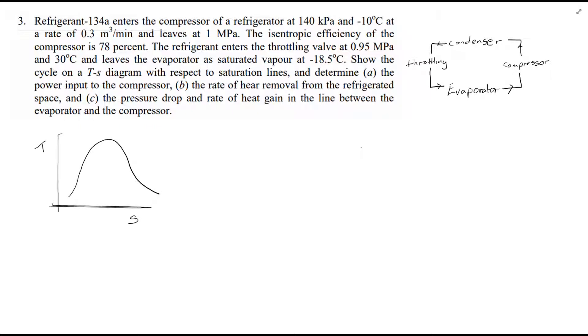Hello and welcome to example sheet 2 question 3. We're looking at refrigerant 134A and there's a compressor of a refrigerator at 140 kPa, minus 10 degrees and a rate of 0.3 m³ per minute, leaving at 1 MPa. The isentropic efficiency of the compressor is given - this is an important thing to note. Refrigerant enters the throttling valve at 0.95 MPa and 30°C, bath rate of saturated vapor at minus 18.5 degrees C. The problem asks us to show the cycle on the TS diagram and determine the power input to the compressor.